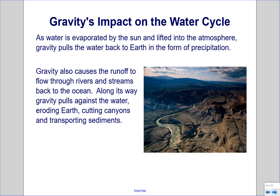Gravity's impact on the water cycle. As water is evaporated by the Sun and lifted into the atmosphere, gravity pulls the water back to Earth in the form of precipitation. Gravity also causes the runoff to flow through rivers and streams back to the ocean. Along its way, gravity pulls against the water, eroding the Earth, cutting canyons, and transporting sediments.